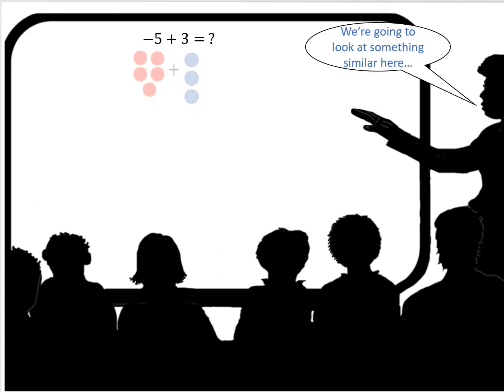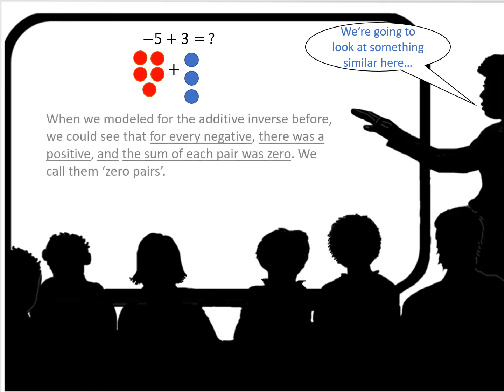We're going to look at something similar here. Let's take for example negative 5 plus 3 and we want to find out what is the sum of that. Well we're going to use chips.